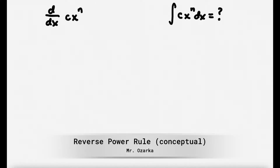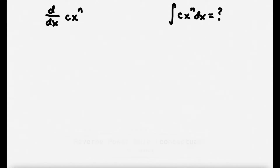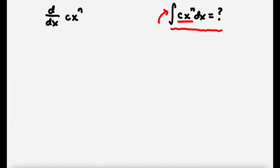This is going to be a video all about reverse power rule. What we're trying to find is the indefinite integral — the antiderivative — of a constant times a power function, c times x to the n, with respect to x. That's what we're solving here. It's very abstract — just variables and constants — so we're trying to figure out what this simplifies to.